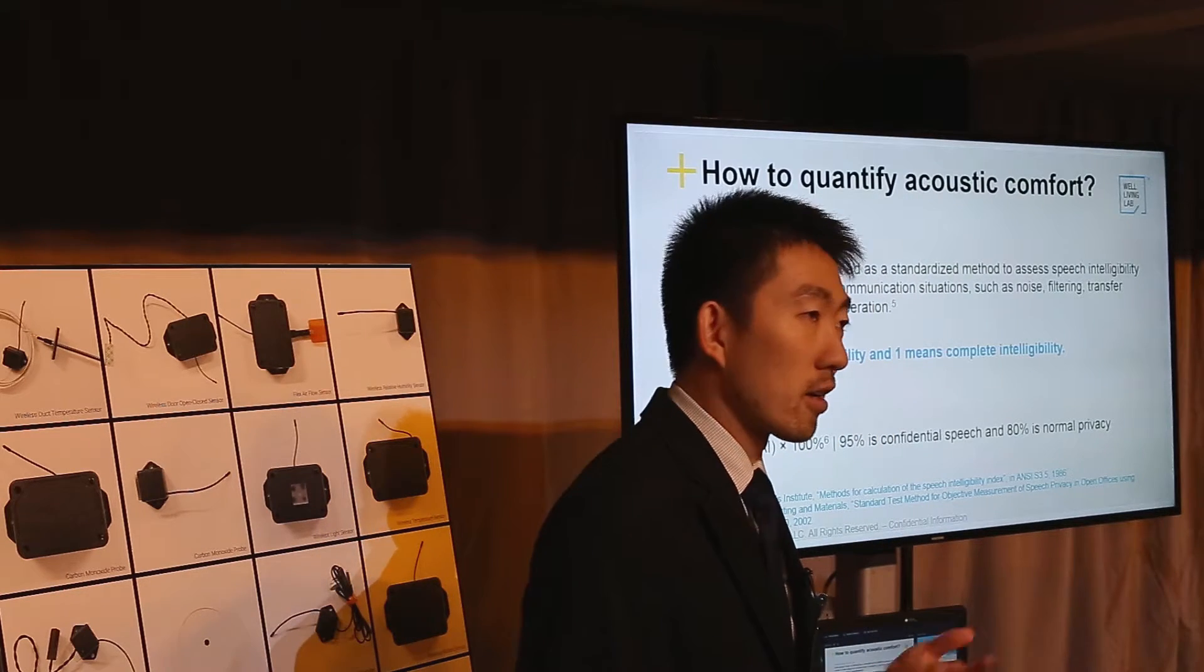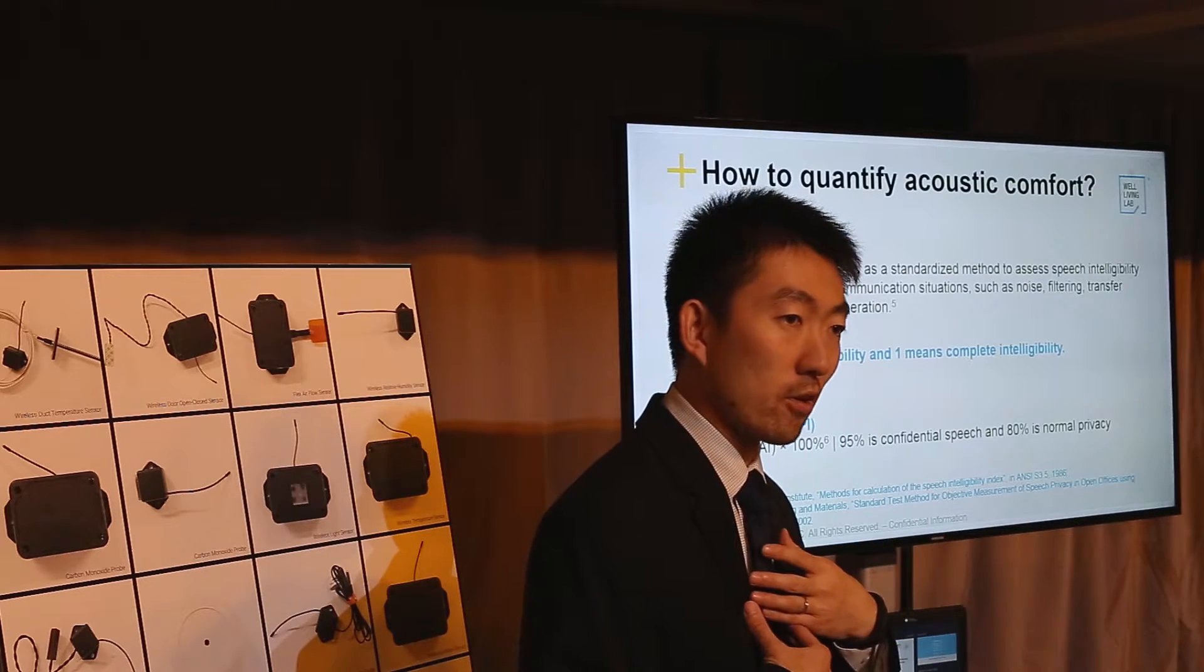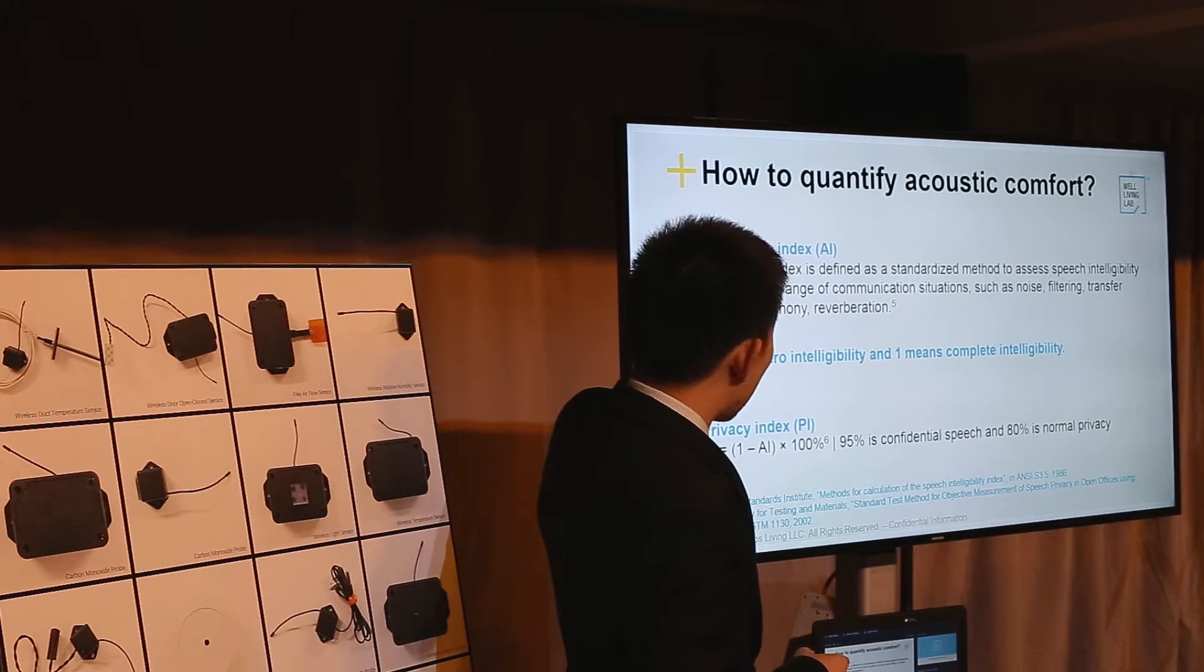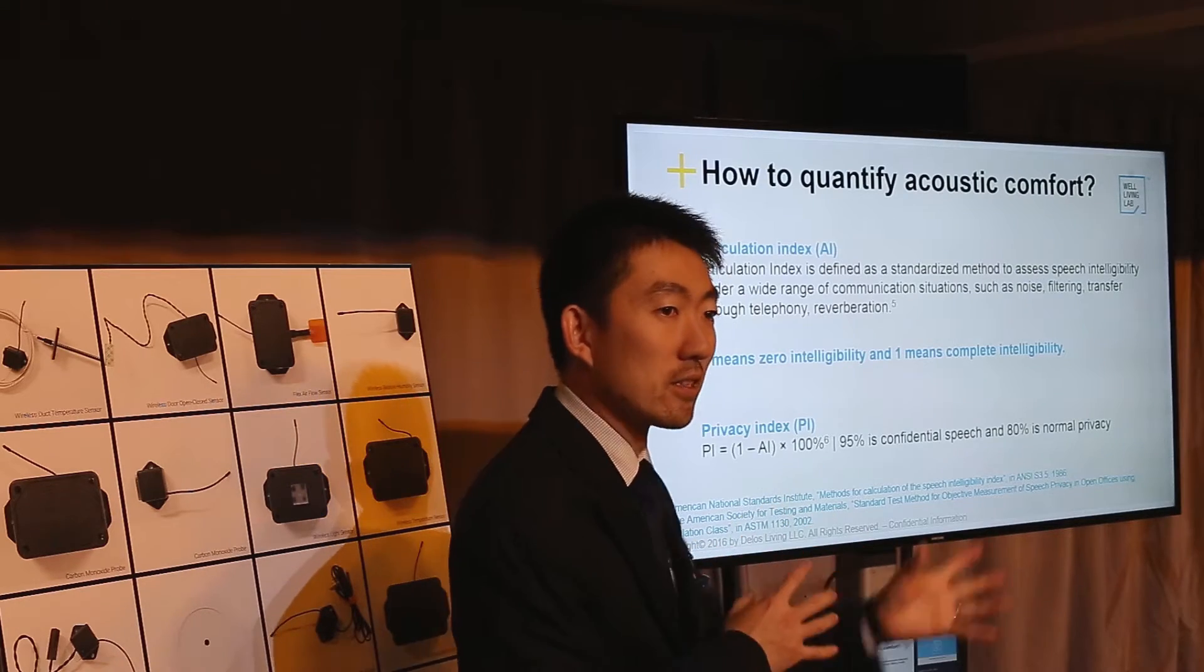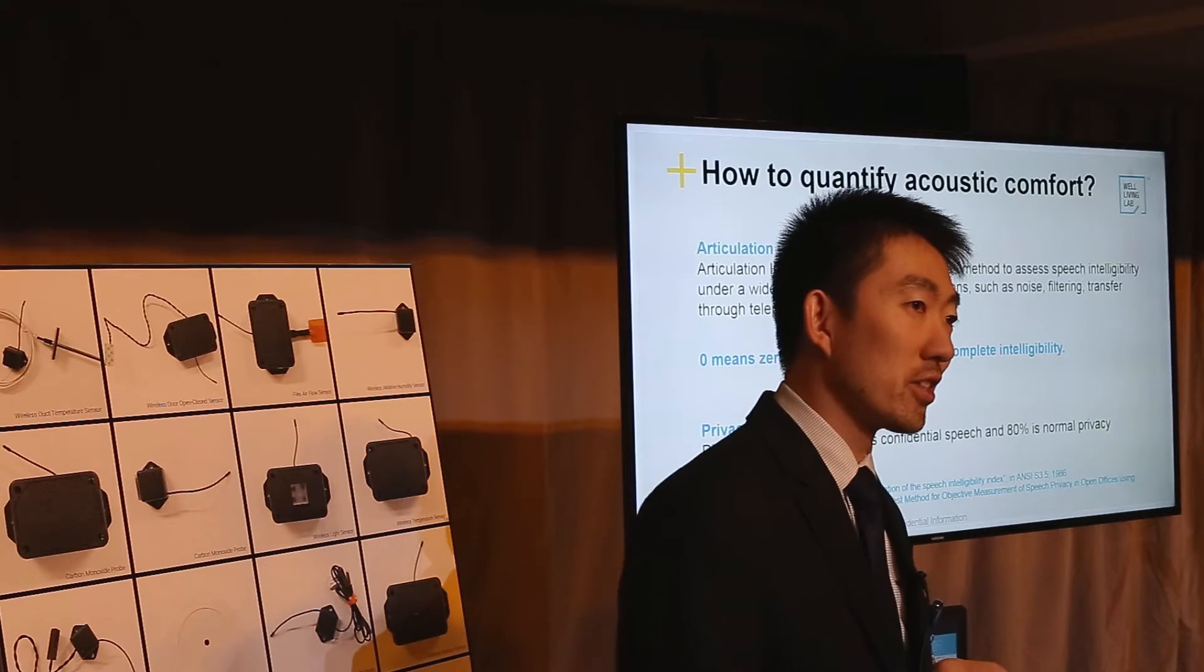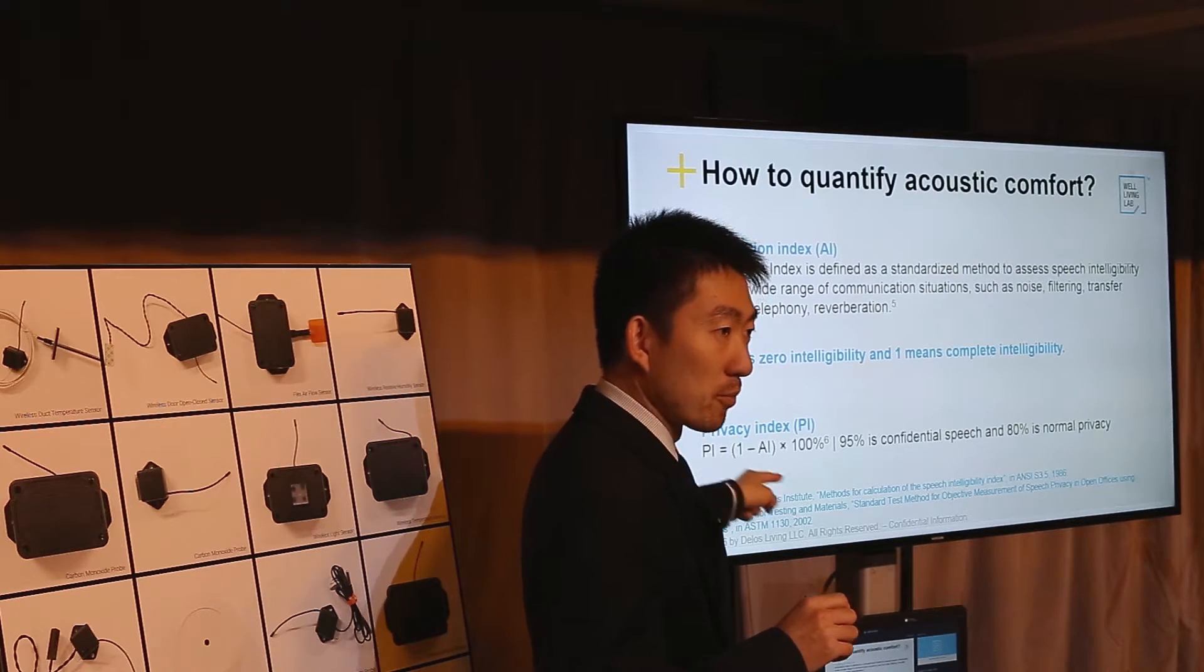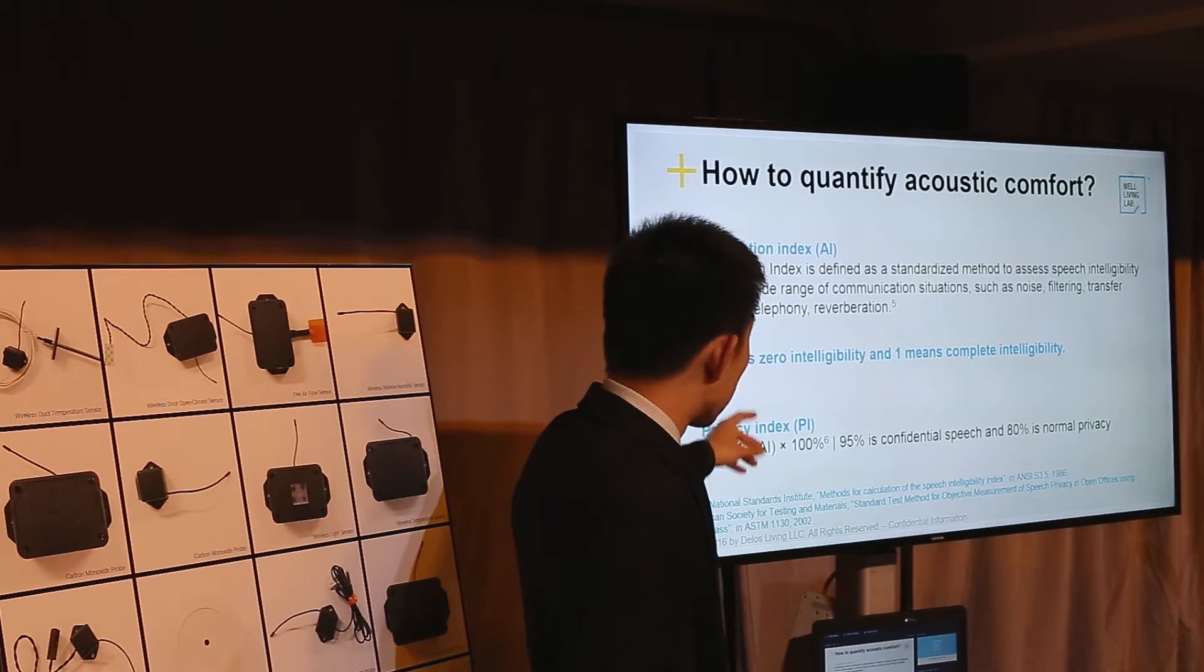It's a measure of speech intelligibility. It can be caused by different things - you have some hearing loss, or the environment is really noisy. It could be the source, it could be the media. Built on top of this is privacy index. It's kind of tricky - it's the reverse of articulation index. If you can hear more clearly, it means you have less privacy. You want this to be higher, so other people cannot hear you, but only someone you want to talk to can hear you.